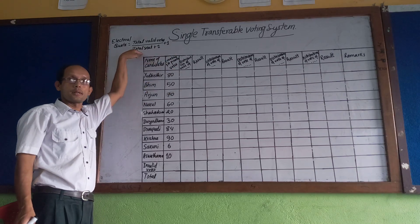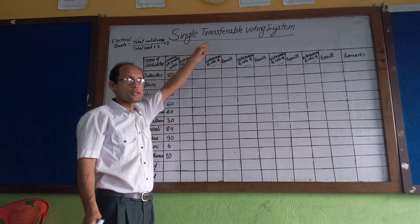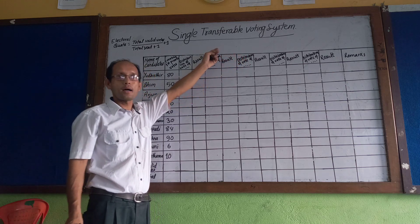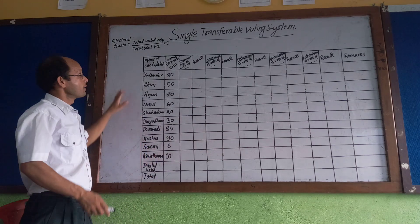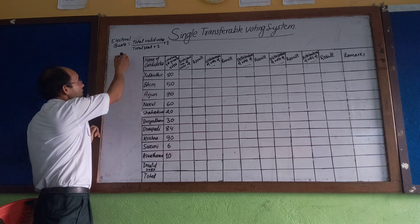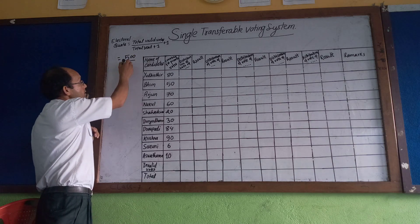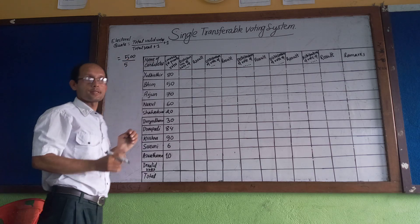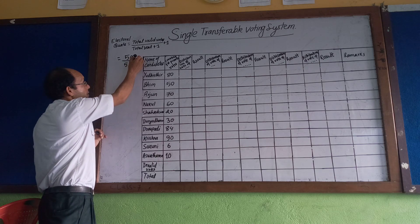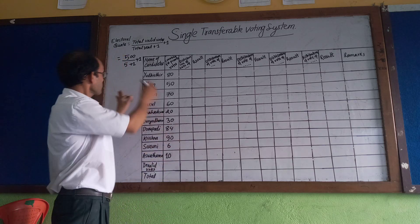This formula was propounded by Thomas Hare, so it is also called the Hare system. It is also associated with Andrae of Denmark. For example, in a constituency suppose there are 500 voters and 5 total seats.